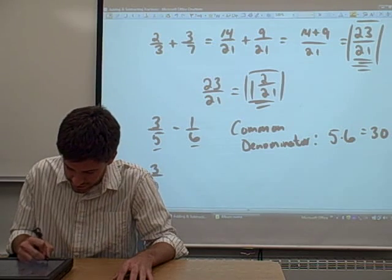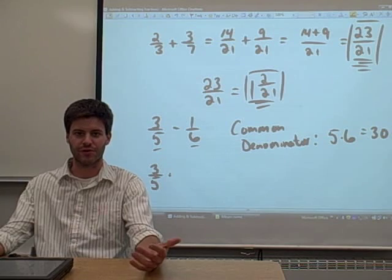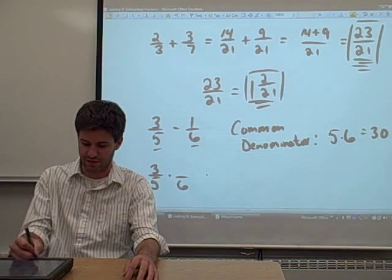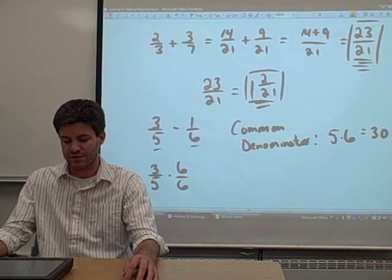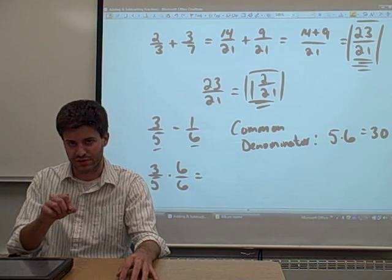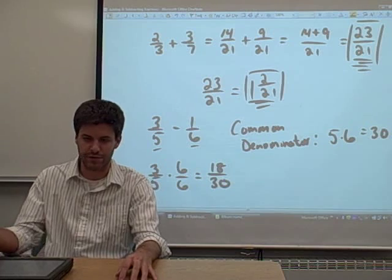So let's investigate 3 fifths. We want to convert 3 fifths to a fraction that has 30 as its denominator. That means we need to multiply the 5 times the 6 to get 30 in the denominator. To make that legal, we have to multiply the numerator by 6 as well. Multiply straight across, and we get 18 in the numerator, 30 in the denominator.